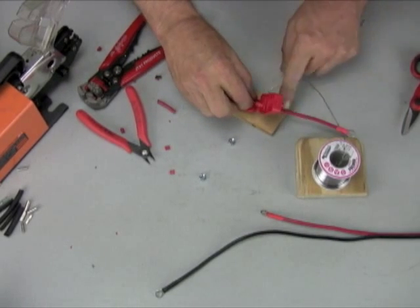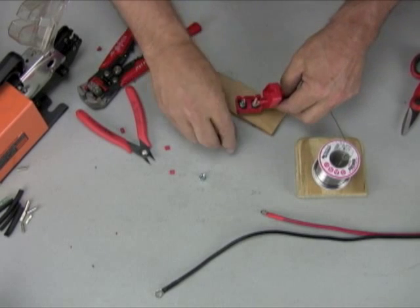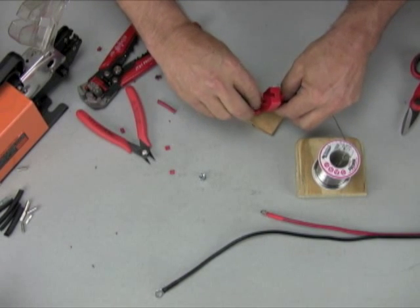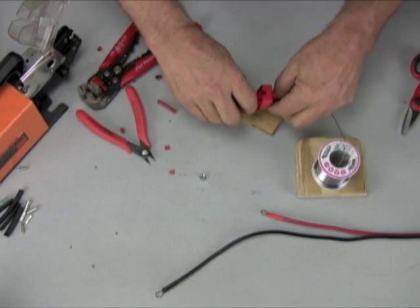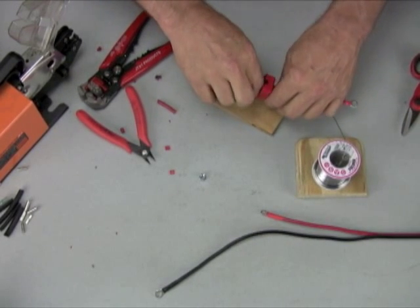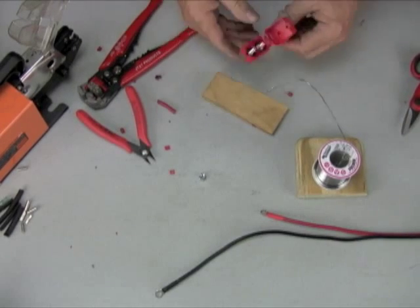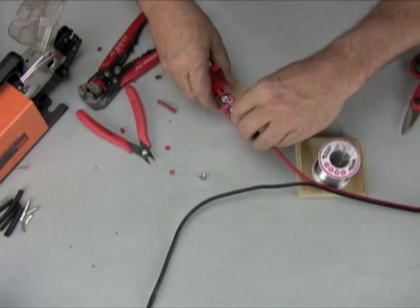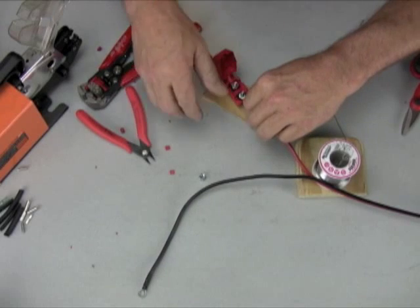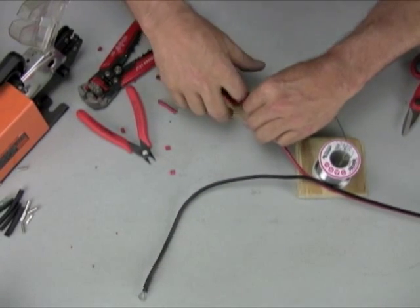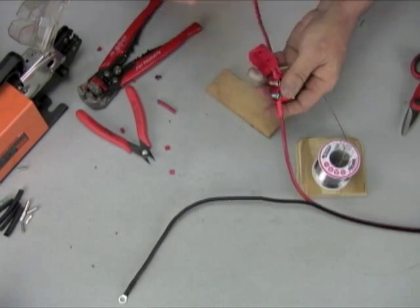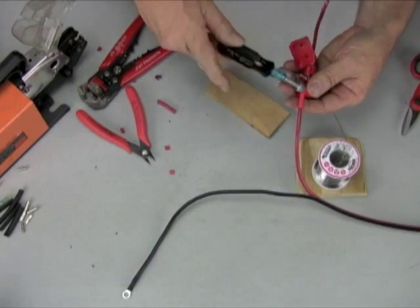And then this end, the end that will end up going to the battery, always goes on the gold post. And it's also marked on there, positive and negative, right on the circuit breaker. I'll put one side on, put the other side on.